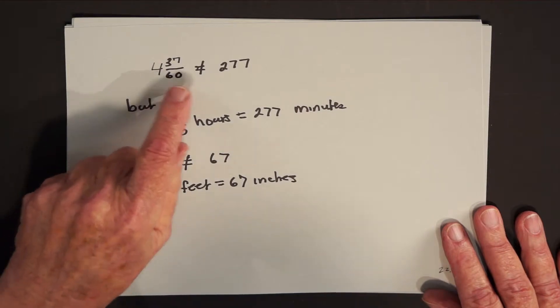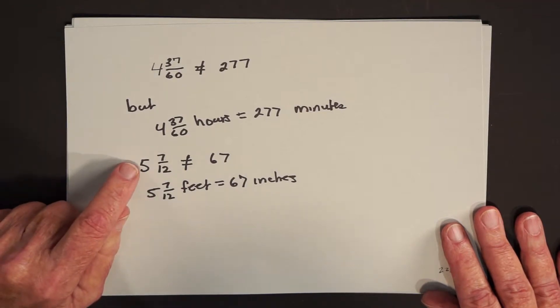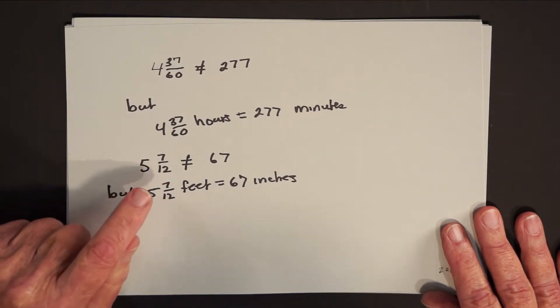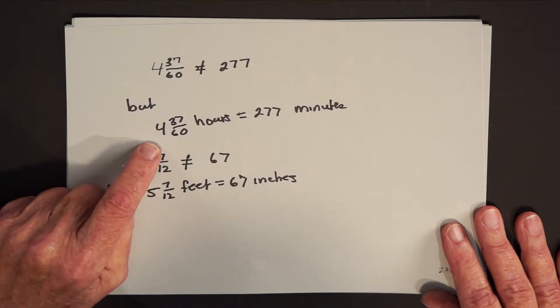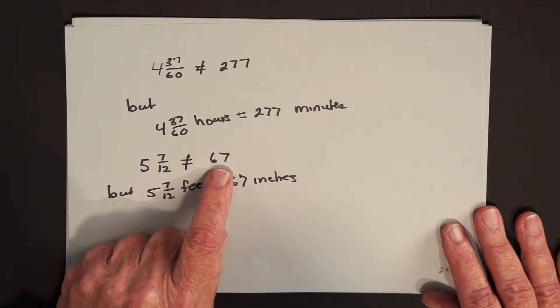It's like saying 12 is not equal to 1, but 12 inches equals 1 foot. In a similar way, when we talk about somebody being 5 feet 7 inches tall, we can say he's 5 feet plus 7 of what it takes 12 of, or we can say he's 67 inches.